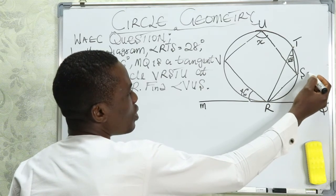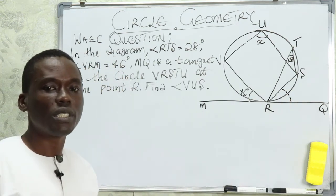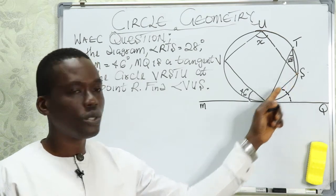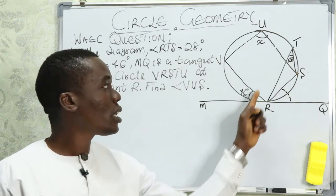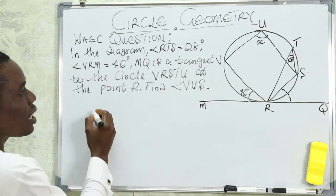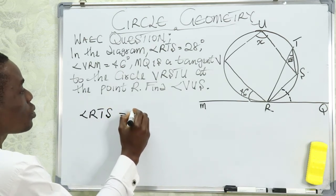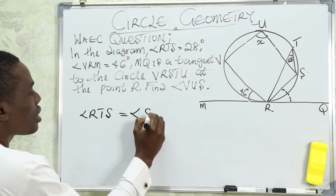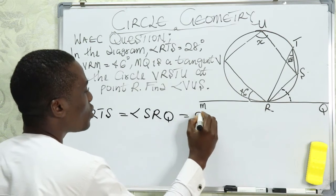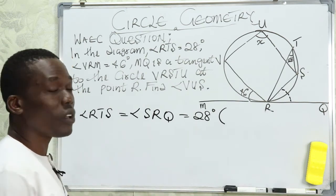We want to find the value of angle SRQ. Remember, Theorem 14 says the angle between a tangent and a chord is equal to the angle in the alternate segment. So angle RTS is equal to angle SRQ, which means angle SRQ equals 28°.